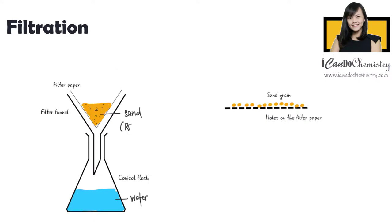Upon filtration, the solid that remains on the filter paper is called the residue. In this case, sand is the residue. The liquid that passes through the filter paper is called the filtrate. In this case, water is the filtrate.